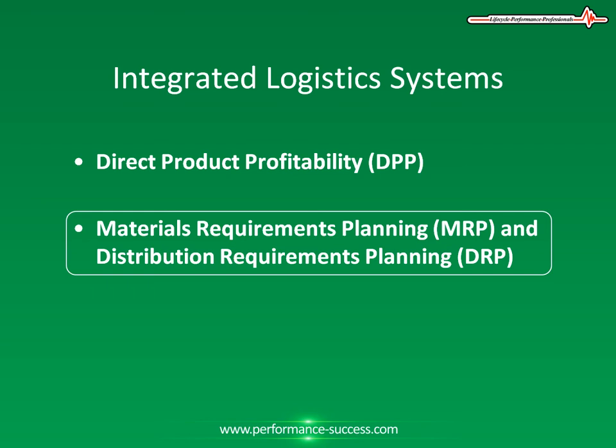Subsequently, Manufacturing Resource Planning (MRP2) was developed with the objective of improving productivity through the detailed planning and control of production resources. MRP systems are based on an integrated approach to the whole manufacturing process, from orders through production planning and control techniques to the purchasing and supply of materials.